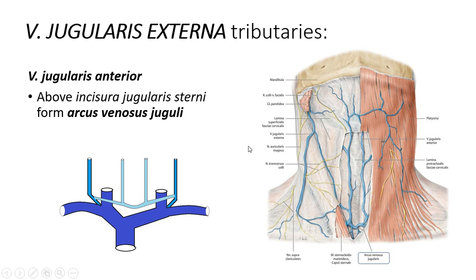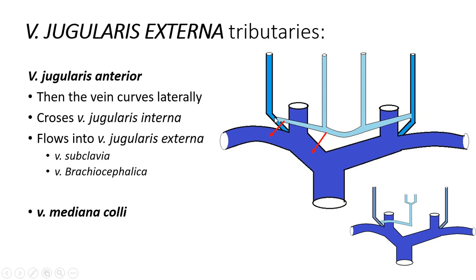Sometimes this vein does not flow into the external jugular vein but into the subclavian vein or the vena brachiocephalica. On both sides, sometimes we don't have the vena jugularis anterior at all and have only one vein — the vena mediana colli — formed by fusion of the plexus veins under the os hyoideum, which then flows into one of the venae jugulares externae.